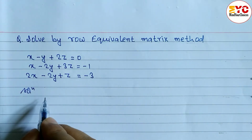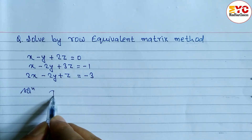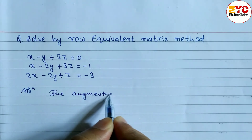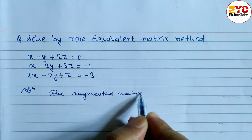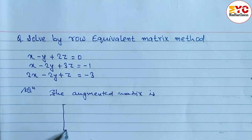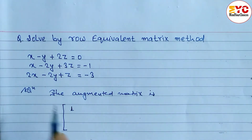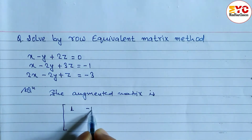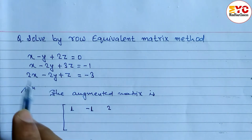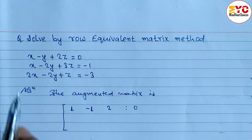First of all, we have to write the equations in augmented matrix form. We write the coefficients of x, y, and z. For the first equation, the coefficient of x is 1 (nothing written means 1), coefficient of y is -1, coefficient of z is 2, and the constant is 0.